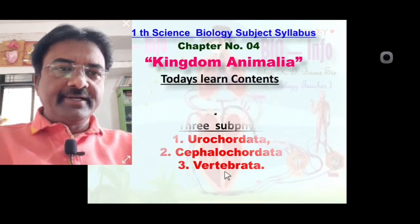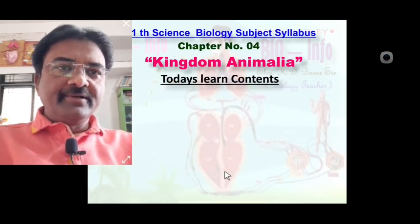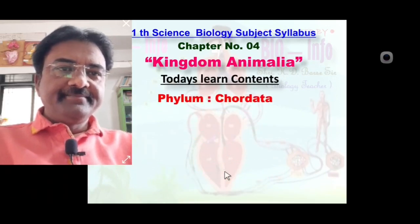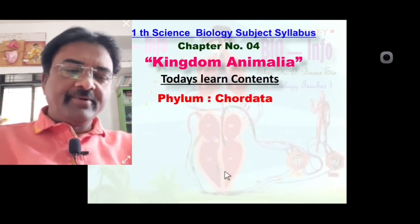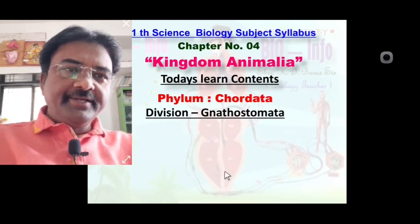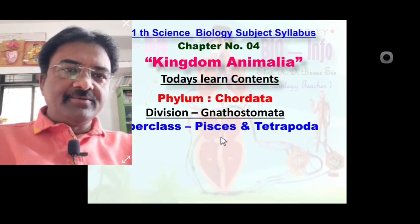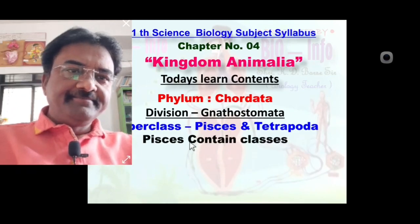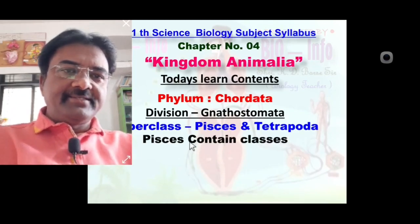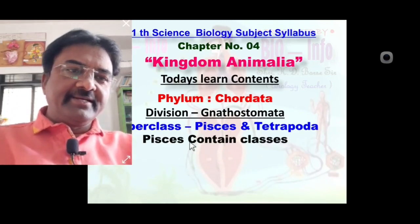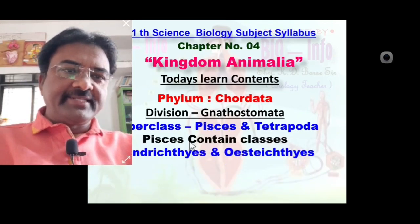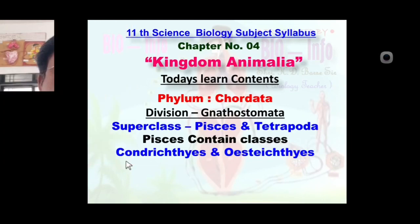Today we are going to learn some more concepts including Kingdom Animalia, phylum Chordata, division Gnathostomata, superclasses Pisces and Tetrapoda. Pisces superclass contains classes Chondrichthyes and Osteichthyes. So let us start.